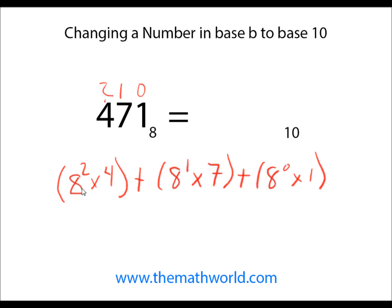So if we come through 64 times 4, we know from our last example is 256. We're going to add that to 8 to the 1st power is 8 times 7 is 56. And we'll add all of this up to 1. So 256 plus 56, 312, and plus 1 is 313. So 471 base 8 is equivalent to 313 base 10.